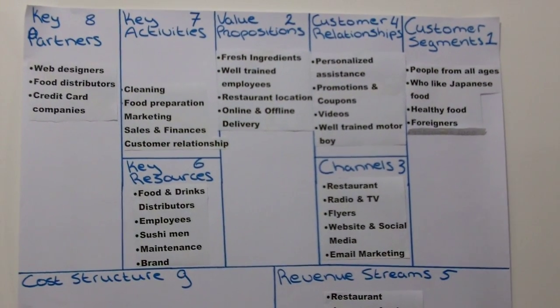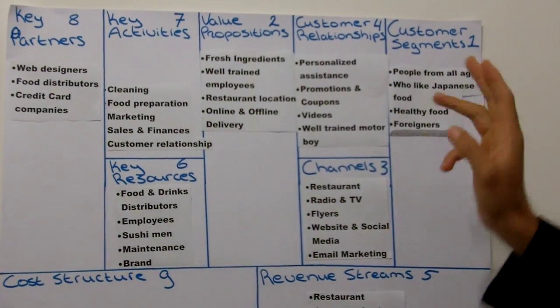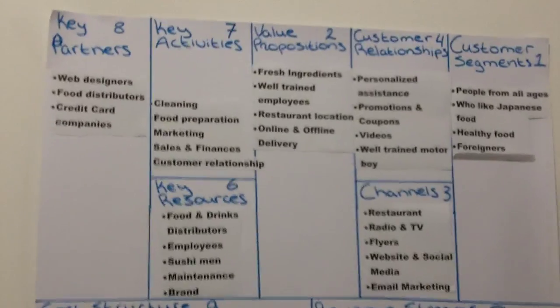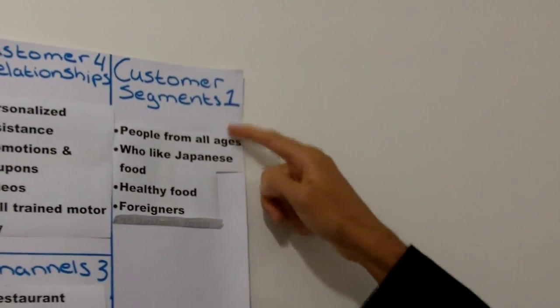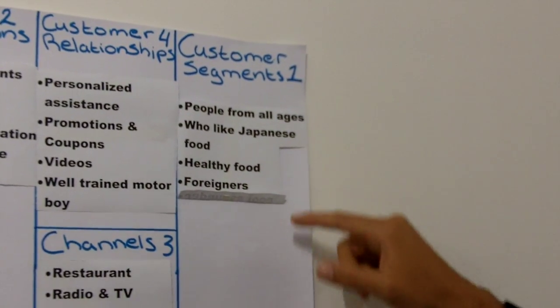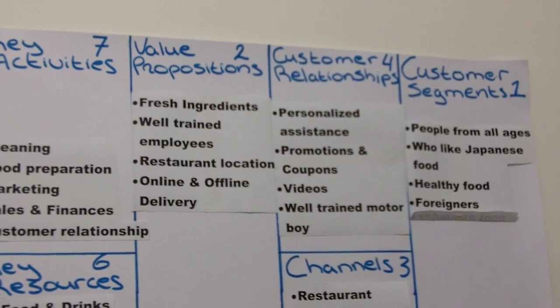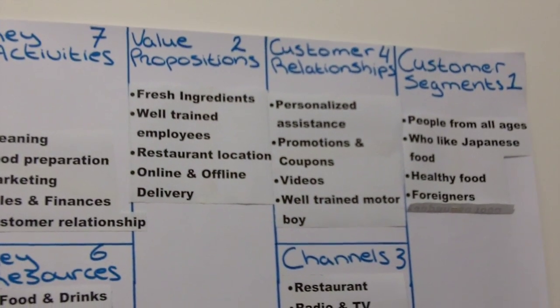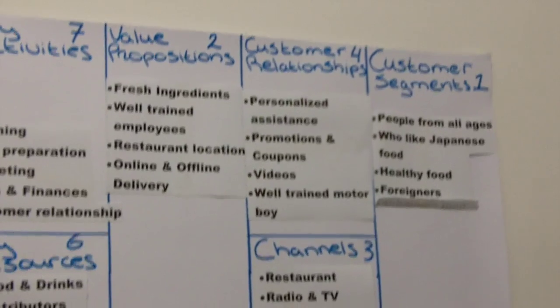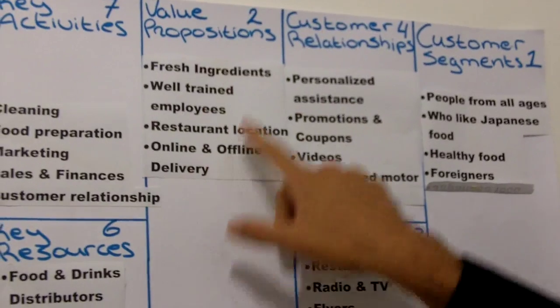If this is the first time watching this video, I want to briefly explain what the nine building blocks are composed of. First, you have customer segments — you have to identify who your customers are, because without this it's very confusing to set up a business. Once you have that figured out, you must understand the value proposition: what value are you going to provide to your customer, and why should your customer buy from you and not your competition? As you can see, we already have all of this set up.